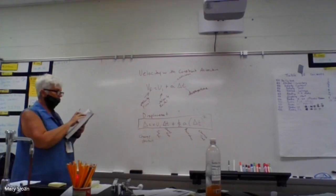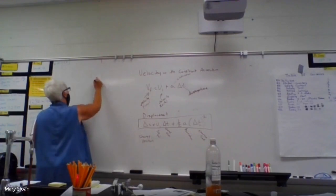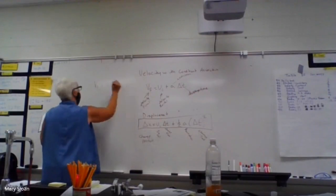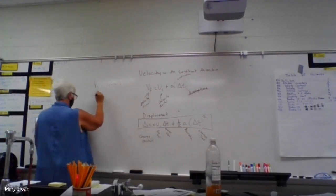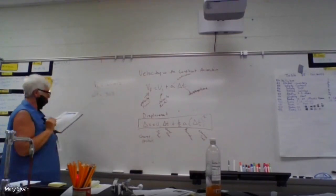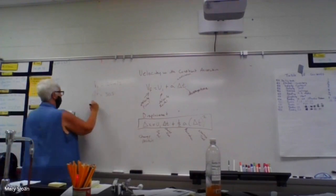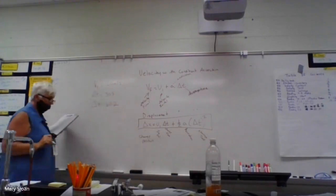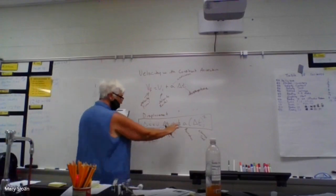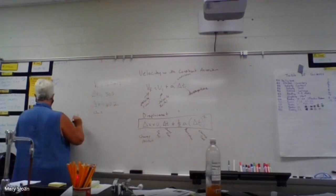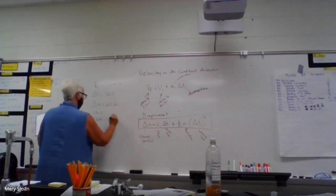It says a car is moving with a speed of 1.0 meters per second. What is that? Velocity initial. It increases speed uniformly so that in 30 seconds it has traveled - 30 seconds is change in time. And it traveled 60.2 meters, which is the change in position or displacement. So we are trying to find A.